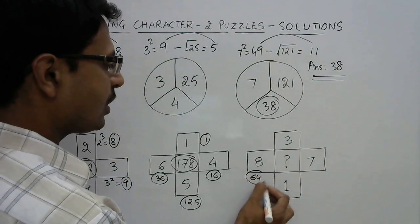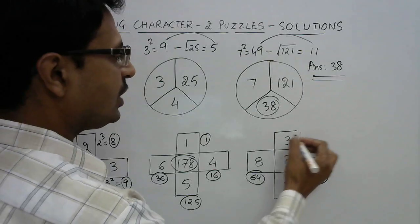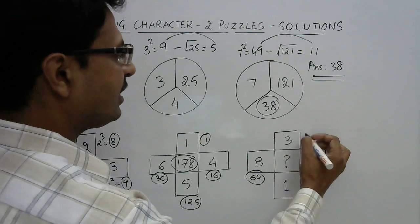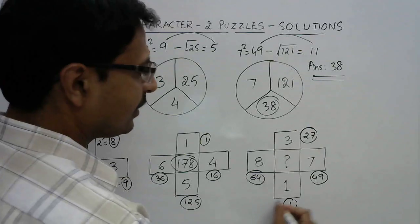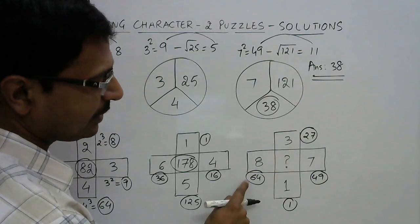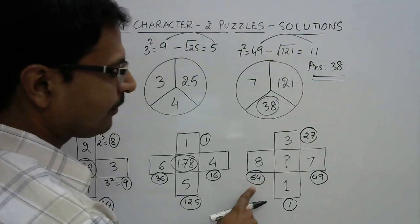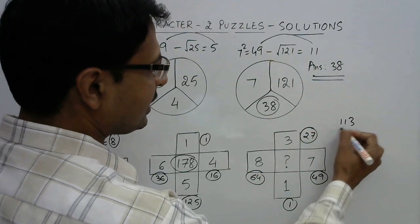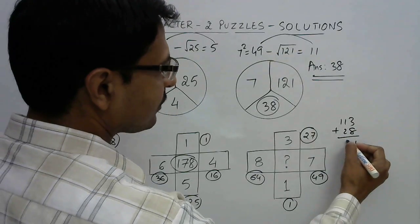So let's apply the rule here to get to the answer. 8 square is 64, 7 square is 49, 3 cube is 27, and finally 1 cube is 1. So add the numbers here: 64 plus 49 is 113.